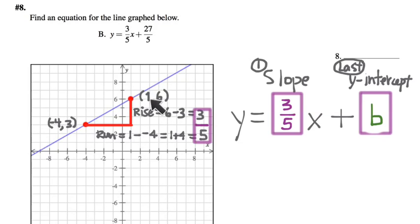So I'm going to use the one that doesn't have any negatives just because it feels easier. So if I put in this point, a 1 for x and a 6 for y, then I'm going to end up with something that looks like this: 6 equals 3 fifths times 1 plus B. And now all we have to do is solve this equation for B. Well, 3 fifths times 1 is just 3 fifths. That's what happens when you multiply something by 1.